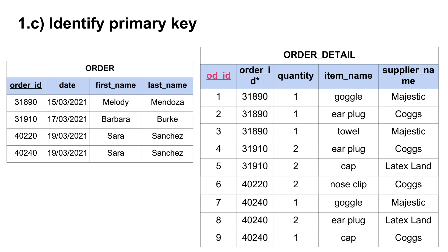We underline the primary key and place an asterisk after the order ID attribute name in the order detail table — because as per the instructions, we underline the primary key and put an asterisk at the end of the foreign key. So there we have the logical data model now in first normal form, having completed the three action items required to convert unnormalized data into 1NF.